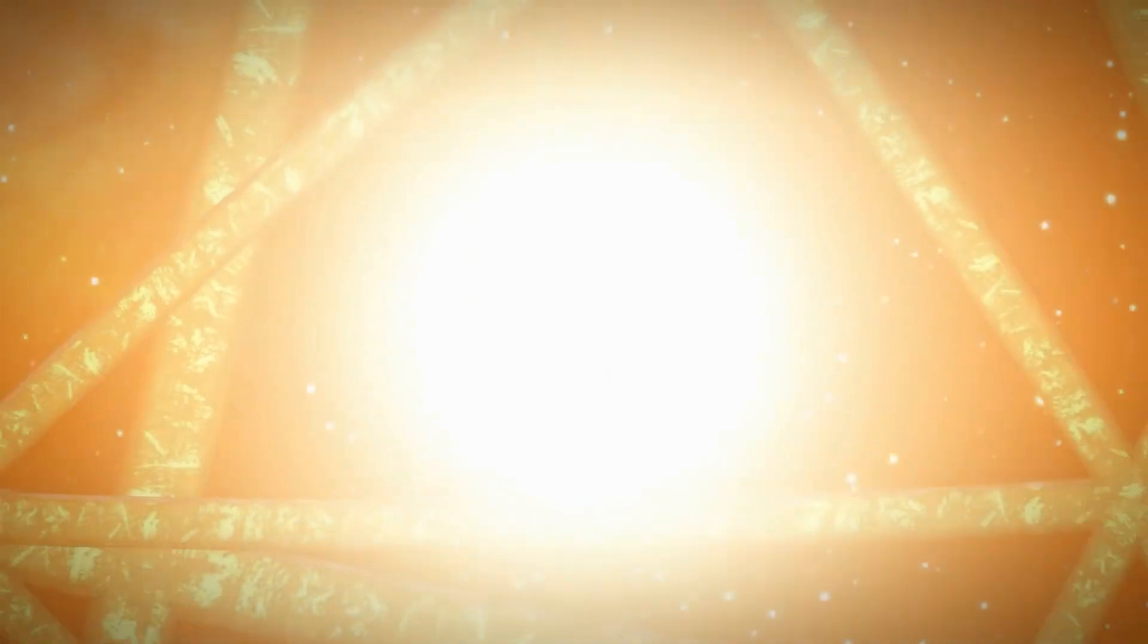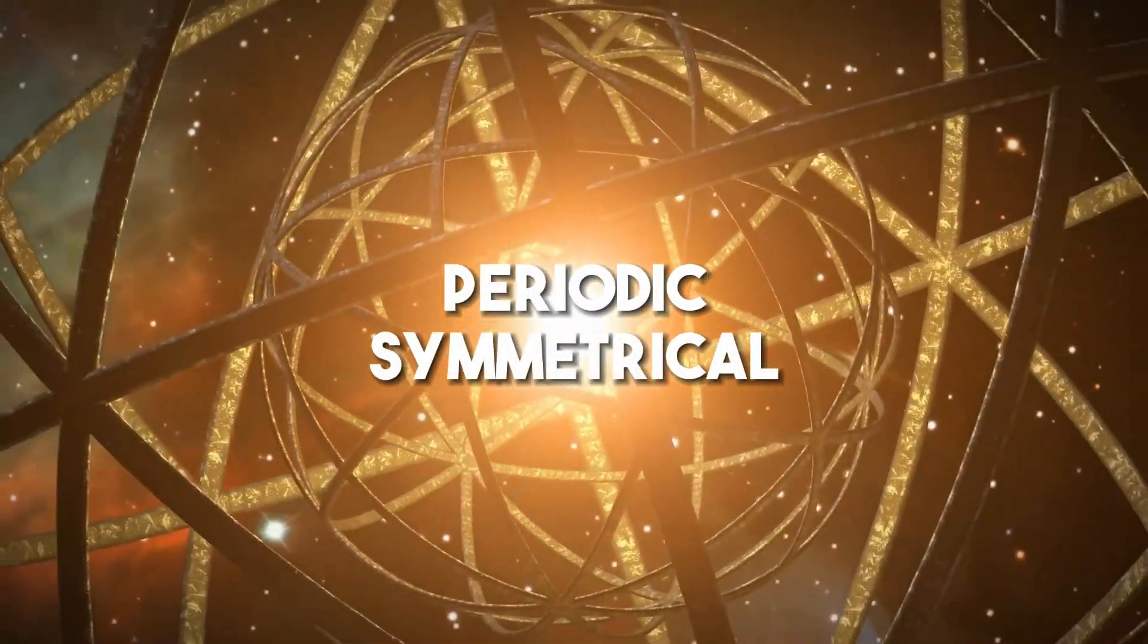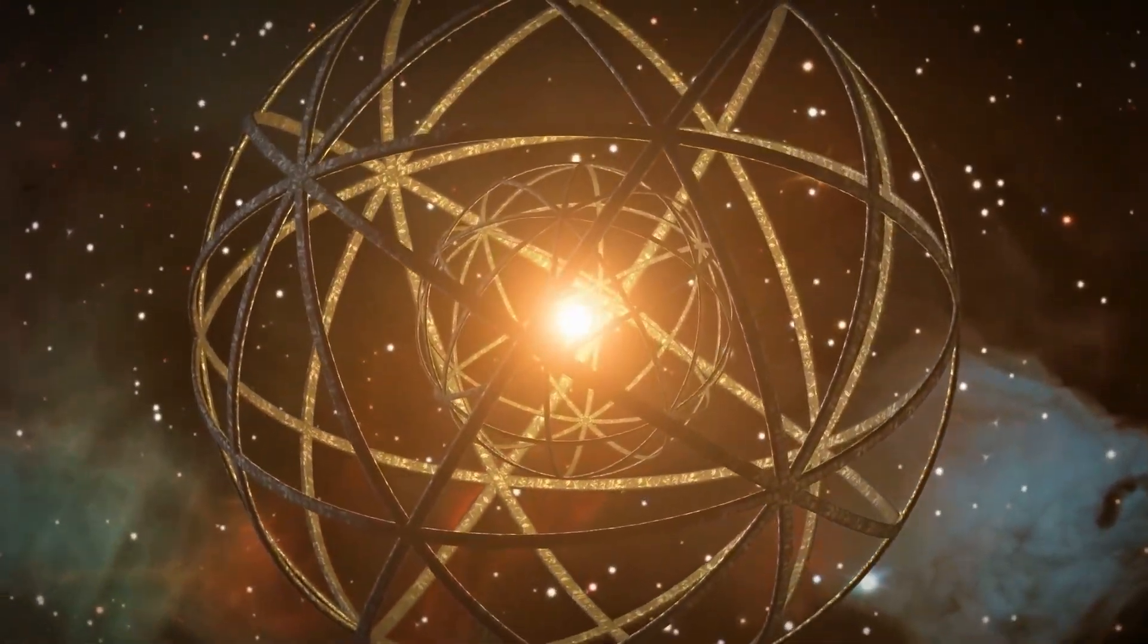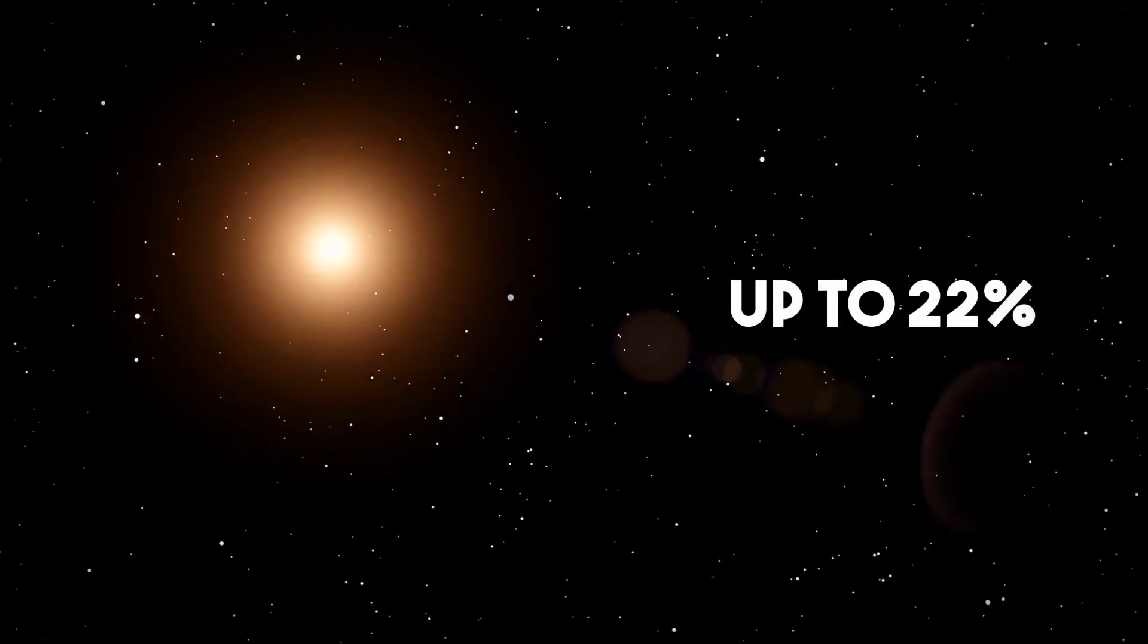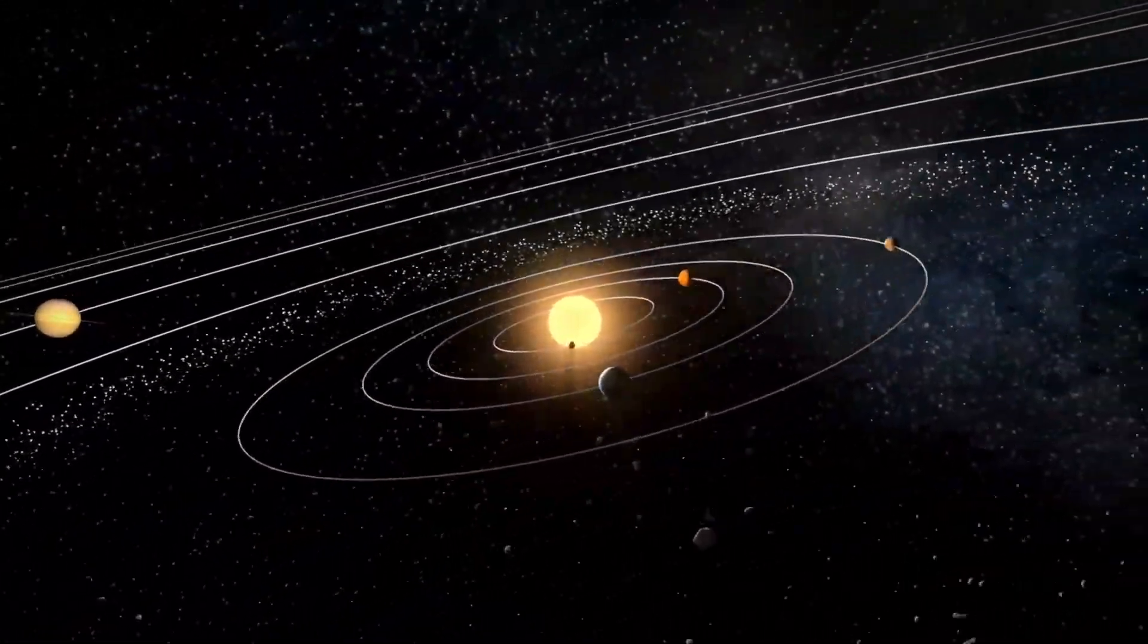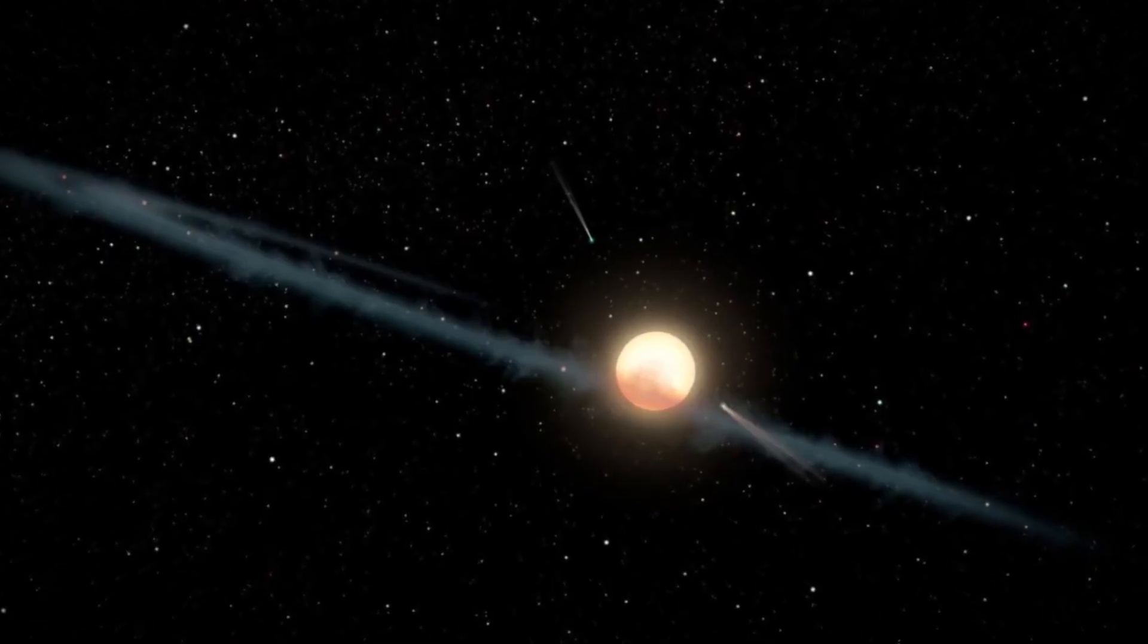Normally, planets passing in front of their star cause a periodic and symmetrical dip in the light we observe. However, Tabby's star was different. The dimming events were significant, up to 22%, and didn't display the regularity typically associated with planetary orbits. This irregularity, along with the substantial dimming, was something completely unheard of.